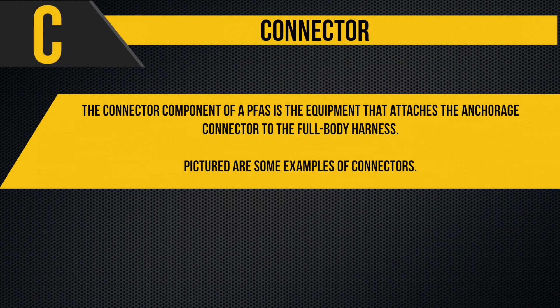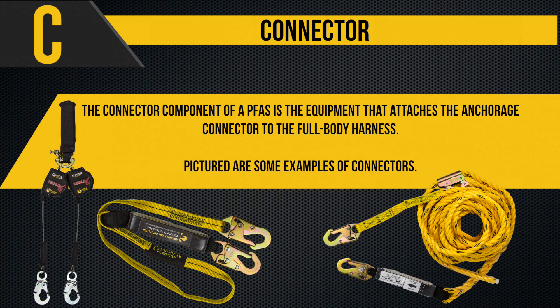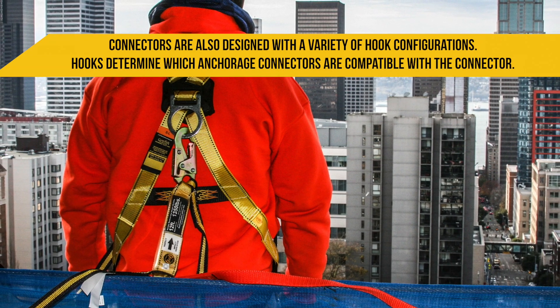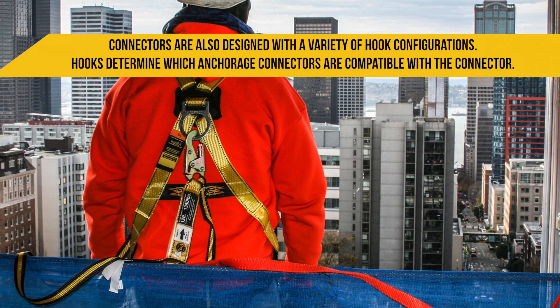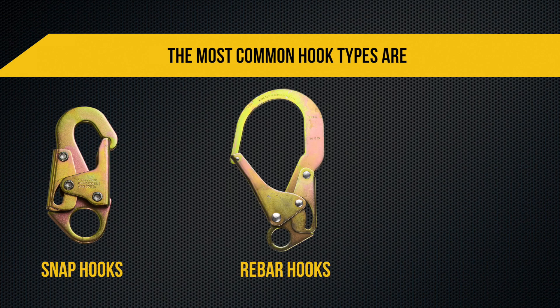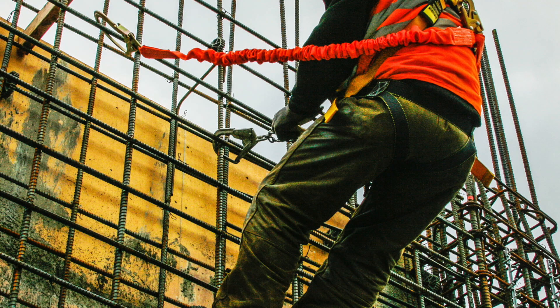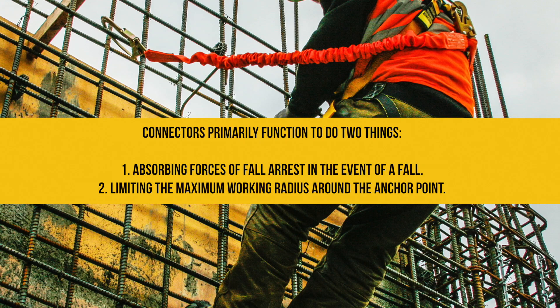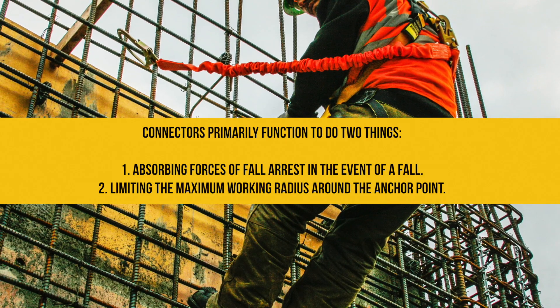The connector component of a PFAS is the equipment that attaches the anchorage connector to the full body harness. Connectors are also designed with a variety of hook configurations, which determine which anchorage connectors are compatible. The most common hook types are snap hooks, rebar hooks, and carabiners. Connectors primarily function to do two things: absorbing the forces of fall arrest in the event of a fall, and limiting the maximum working radius around the anchor points.